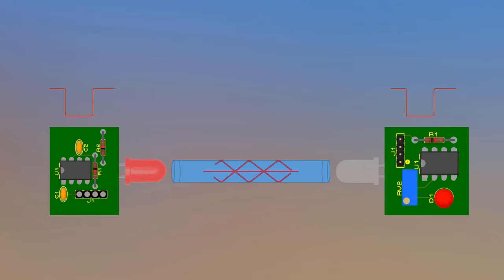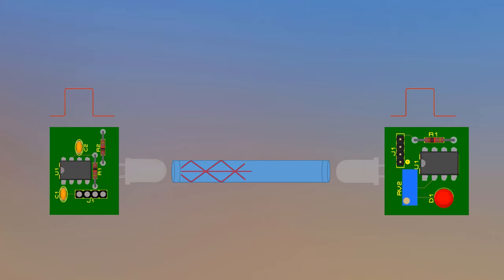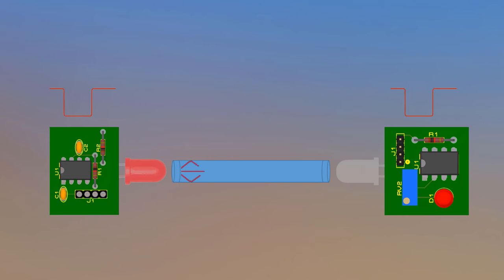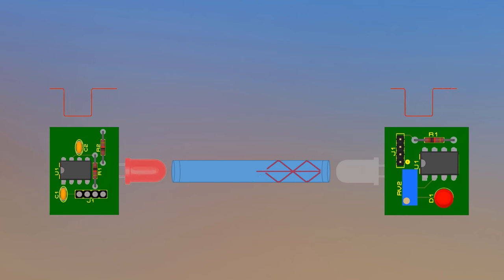In conclusion, optical fiber communication involves converting electrical signals to light signals, transmitting them over long distances through the fiber, and then converting them back to electrical signals at the receiver. Now that we have a basic understanding of fiber-optic communication, let's explore how you can integrate it with an Arduino for various applications.